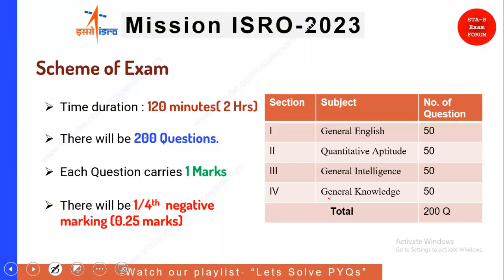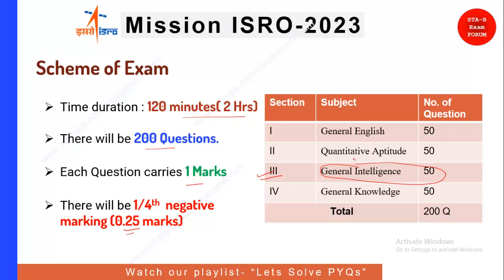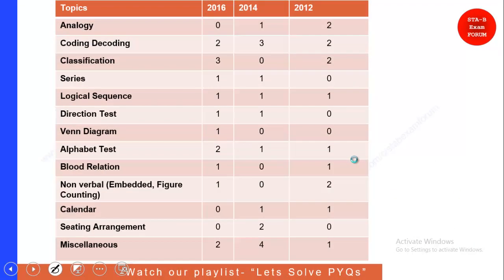The scheme of exam for this particular exam is as follows: the time duration is 120 minutes, that is 2 hours, and there will be 200 questions. Each question carries one mark and there will be one-fourth negative marking, that is 0.25. There are four sections, each section having 50 questions and 50 marks, making a total of 200 questions. In this session we are going to see the important topics for the General Intelligence and Reasoning section.